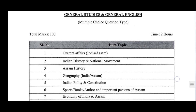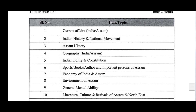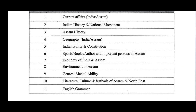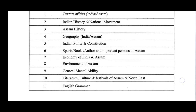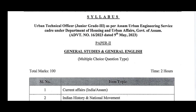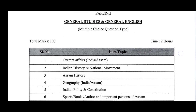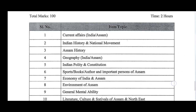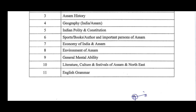Paper 2 is for general studies and general English, for a total of 100 marks. There are multiple questions covering: current affairs (India and Assam), Indian history and national movement, Assam history, geography of Assam and India, Indian polity and constitution, books, sports, authors and important persons of Assam, economy of Assam (India and Assam), environment of Assam, general mental ability, literature, culture and festivals of Assam and North East, and English grammar. The general studies and general English paper is 100 marks and includes basic general studies materials and English grammar.